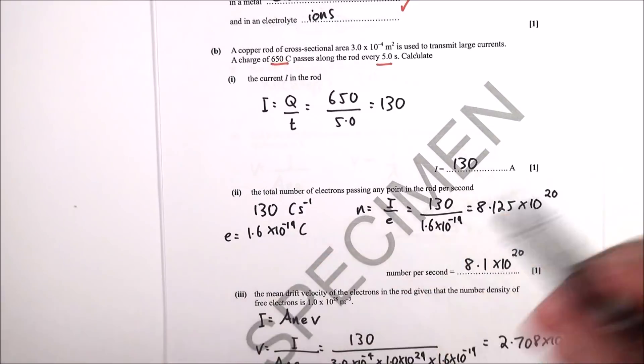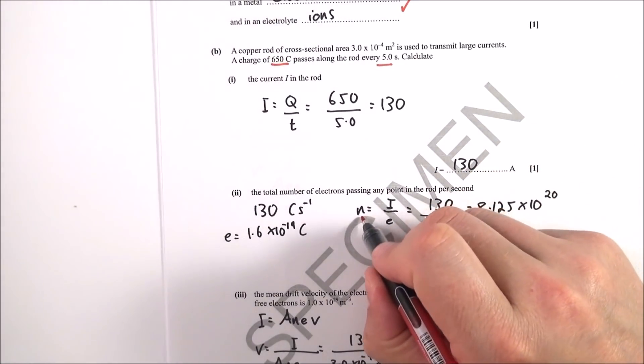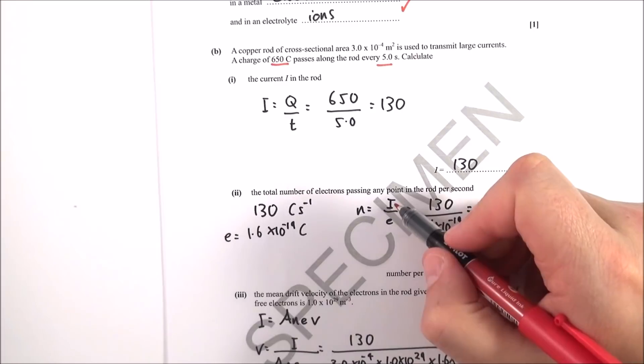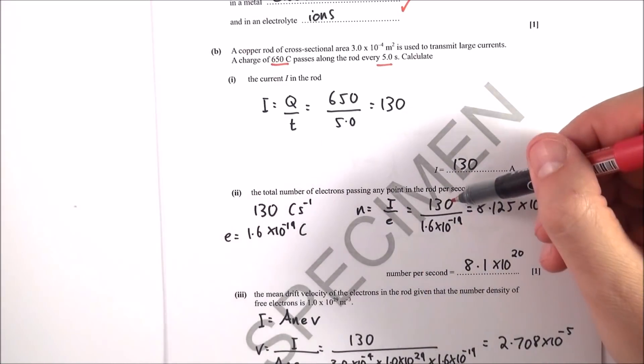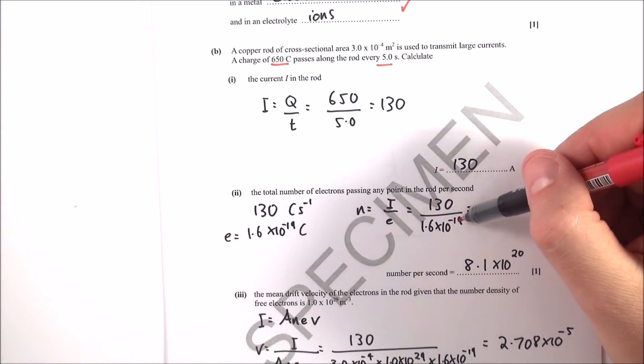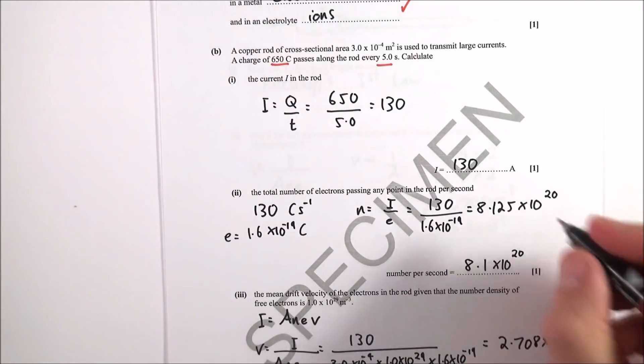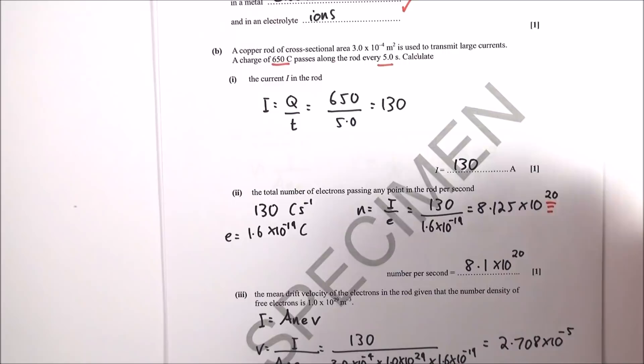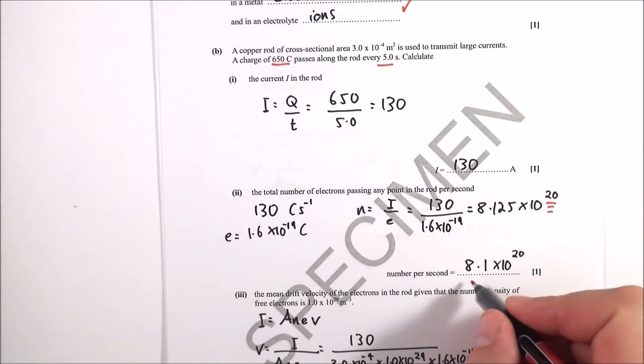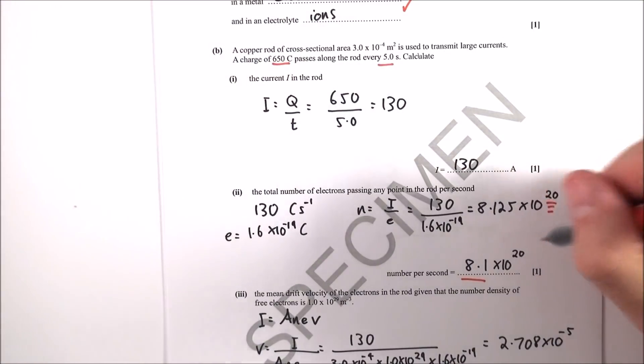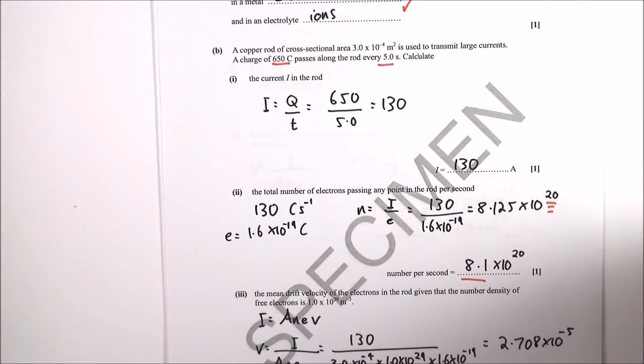That's the elementary charge. That means then the number of charged particles is equal to the current over the elementary charge, so 130 over 1.6 times 10 to the minus 19 is 8.125 times 10 to the 20. This is a very large number, but that's because electrons are very small and there's lots of them. So I've given my answer as 8.1 times 10 to the 20 electrons per second.